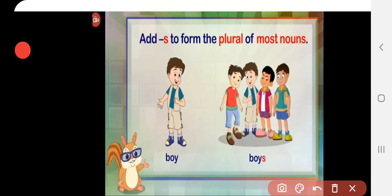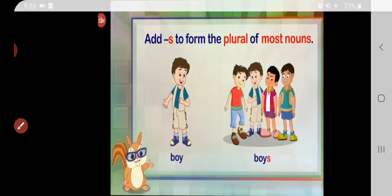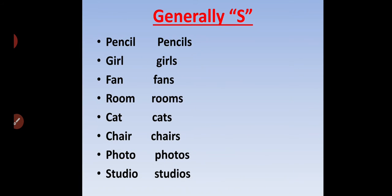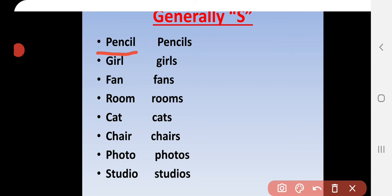Let us look at how singular forms change into plural. You can see boy becomes boys. Another example: fox becomes foxes — more than one fox. Let us understand Rule 1: generally, we add S to a singular noun to make it plural. For example, pencil is a singular noun changed into plural — pencils. We simply add S at the end.